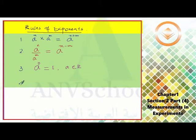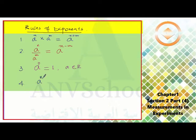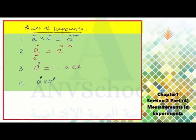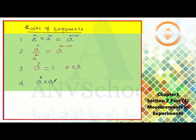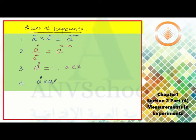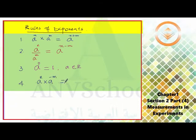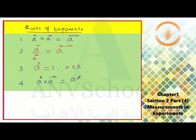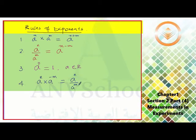The other rule is: if you have a times n multiplied by a raised to negative m, this is the same as a raised to n divided by a raised to m.